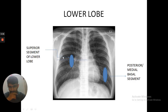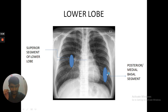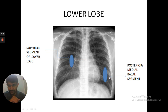Now for the lower lobes. When you pass a line through the hilum and there is a lesion in the paracardiac region that is not causing silhouetting of the right cardiac border, then it is in the superior segment of the lower lobe. If there is a paracardiac lesion without silhouetting of the cardiac border, then it is in the posterior or middle basal segment. Remember, on the left side there is no middle basal segment.